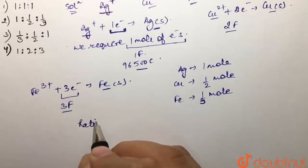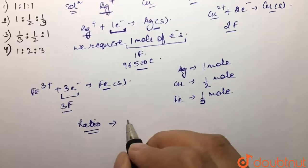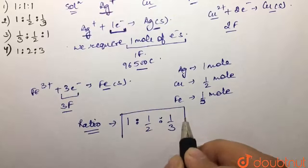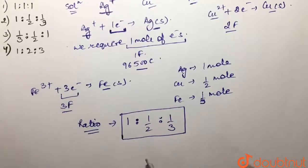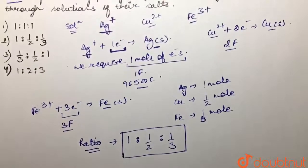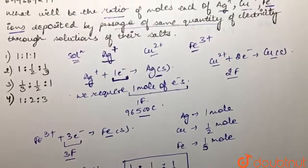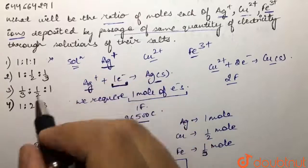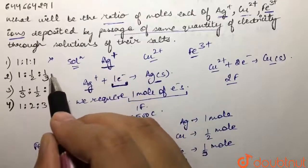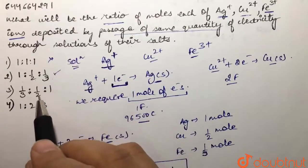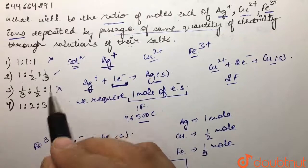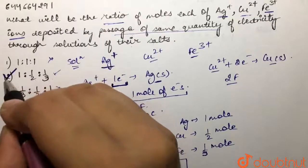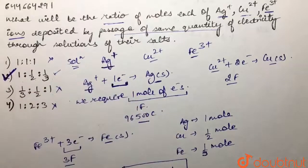So the ratio of moles would be 1 : 1/2 : 1/3. Looking at our options, one is to one is to one is not correct. One is to one-half is to one-third is correct. One-third is to one-half is to one is not correct. One is to two is to three is also not correct. So our answer is the second option — this is the correct ratio of moles for these ions.